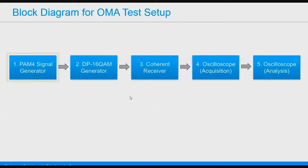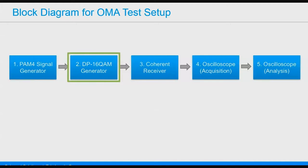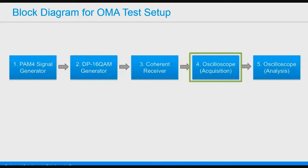First I'll discuss the system setup and go through each of the components. Here's a screenshot — actually a real picture — of where we are right now in our Santa Clara office at LaCroix, where we have our oscilloscope, the Anritsu generator for the PAM-4 signal, and the optical transmitter and receiver. The PAM-4 signal generator generates PAM-4 signals; we're using 28 gigabit per second tributaries. Those signals are sent to the DP-16 QAM generator — the IQ transmitter from Coherent Solutions — generating an optical signal that goes to the Coherent Receiver, which outputs four electrical signals to the LaCroix oscilloscope.